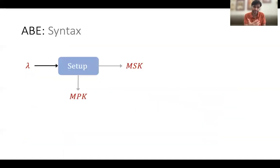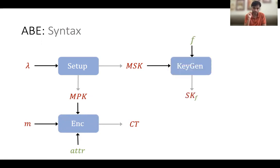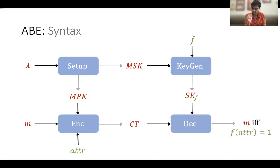Attribute-based encryption can be understood syntactically as follows. We have four algorithms. The setup algorithm samples a pair of master public and master secret key. Using the master public key, anybody can encrypt the message m under a set of attributes. And using the master secret key, anybody can create a functional secret key or a predicate secret key for any function f such that, combining the secret key and the ciphertext, one can recover the message m as long as the policy satisfies the underlying attributes encrypted inside the ciphertext.